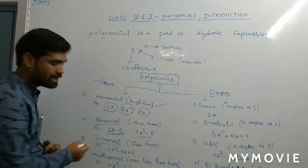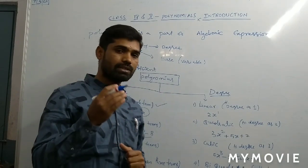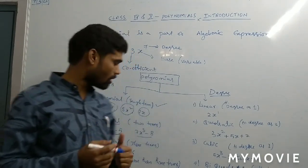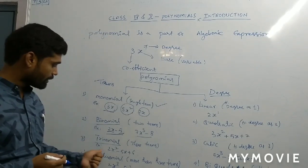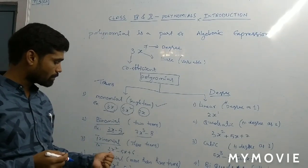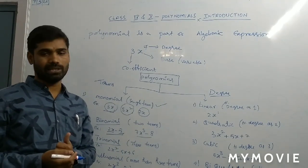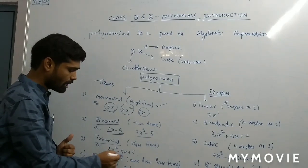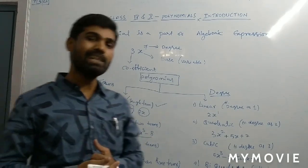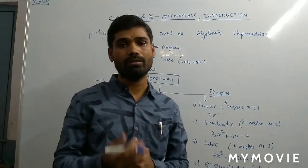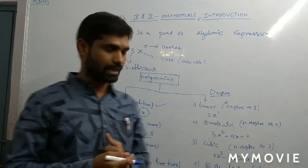And now trinomial. Tri means three, so trinomial is which has three terms. For example, 2x power 2 minus 5x plus 6 — here we can observe three terms: 1, 2, and 3. So when it has three terms, what do we call it? A trinomial.